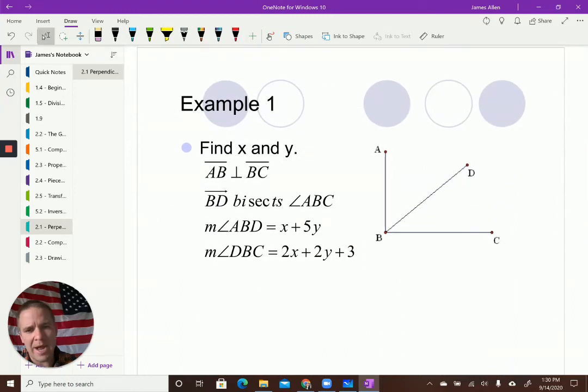And remember, guys, pause, go back. If you need to write some things down, feel free to do so because I like to keep these videos a little bit shorter so they don't take up so much time. Alright. So first example, we want to find X and Y or solve for X and Y so that AB is perpendicular to BC. I have BD bisects angle ABC,